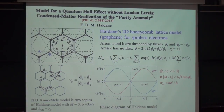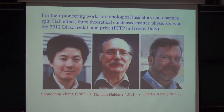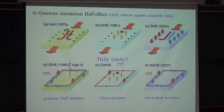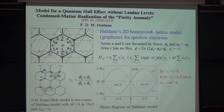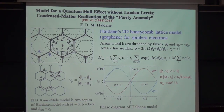The answer is yes. Haldane, who shared this prize, already worked on this long before the current wave of topological material research. Soon after the quantum Hall effect was discovered, he asked: can we have a quantized quantum Hall effect without a magnetic field? Graphene is a popular model. In 1988, he proposed applying a very unusual magnetic flux to a graphene lattice, with flux in B holes and opposite flux in A holes.